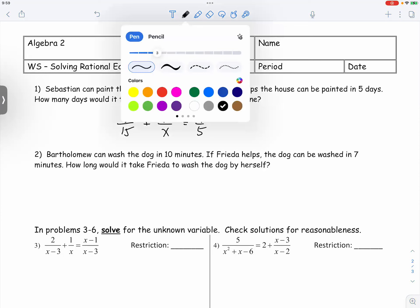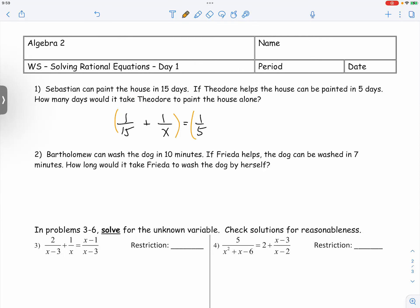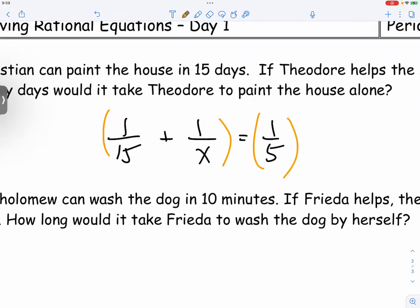And we say, let's go ahead and multiply both sides by the common denominator, which would be what? What's the common denominator? Is it 75X? Too big. Could be smaller. Not wrong, but could be smaller. 15X.